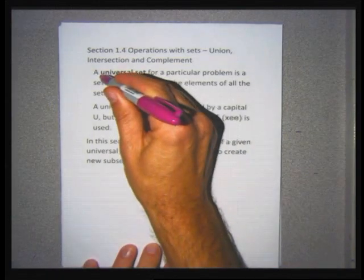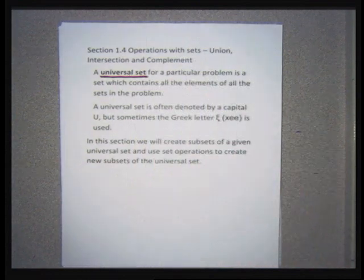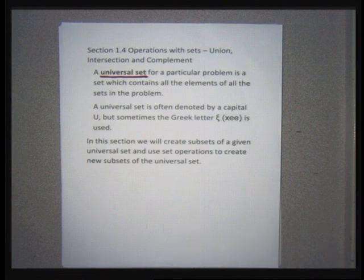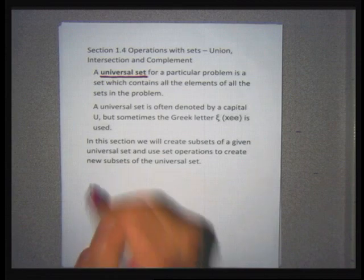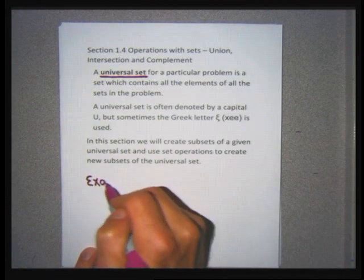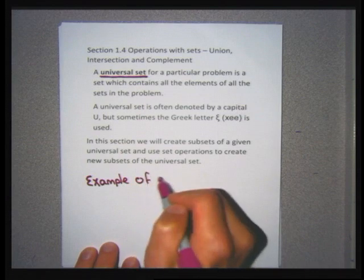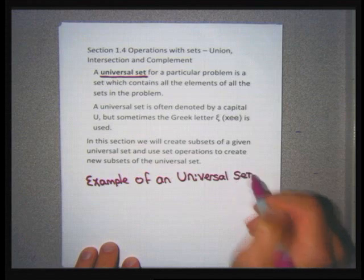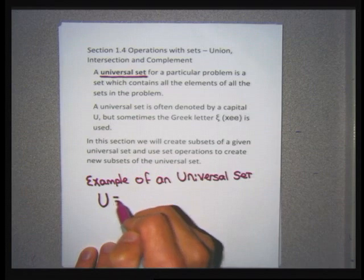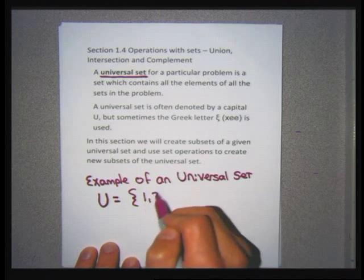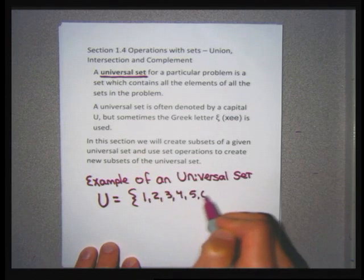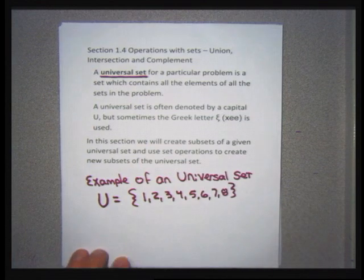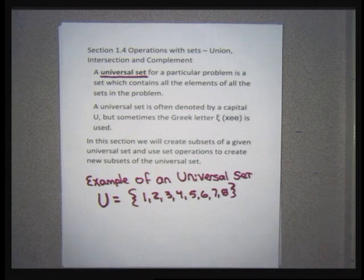The first thing we want to introduce in this section is the concept of a universal set. A universal set is a set created for a particular problem or group of problems, which will contain all of the elements for that set of problems. Usually, universal sets are given the name U. This is a finite universal set that has the numbers one through eight. Most of the time when I create a universal set, I use the letter U.